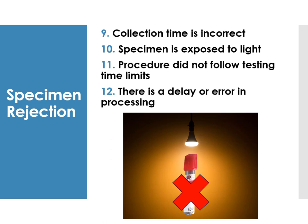Additional rejection reasons include: incorrect collection time, specimen exposed to light, procedure did not follow testing time limits, and delay or error in processing. For example, bilirubin specimens must be protected from light at all times — wrapped in carbon paper or aluminum foil.